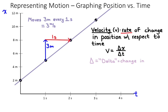So, in my example, the position is changed 3 meters per every 1 second. Which gives us a velocity of 3 meters per second.